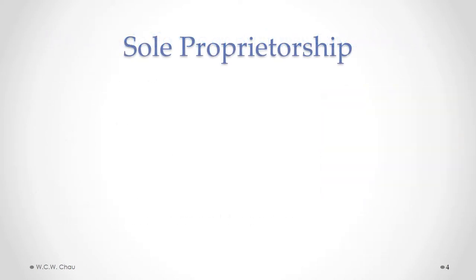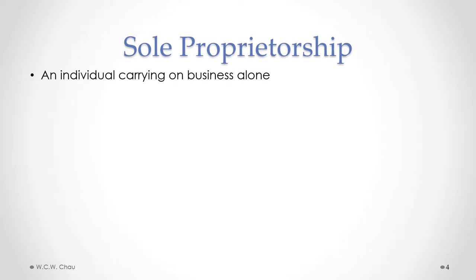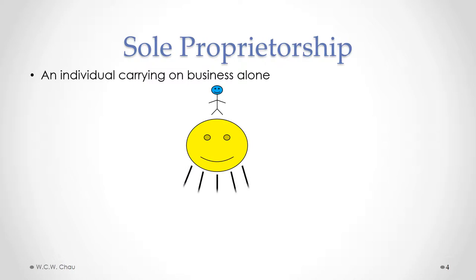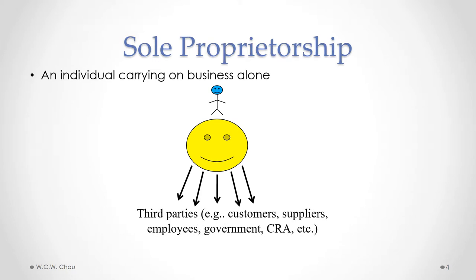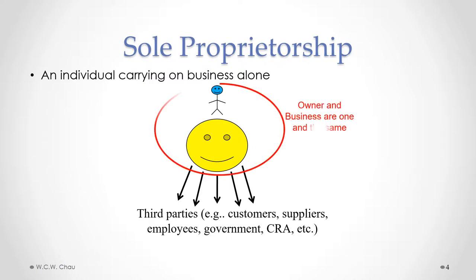Let's do a high-level overview of those three basic types. The simple legal definition of a sole proprietorship is one individual carrying on business alone — one owner carrying on business. The business has various dealings with outside third parties, such as customers, suppliers, employees, various levels of government, and Canada Revenue Agency. The key legal aspect of a sole proprietorship is that the owner and the business are legally considered to be one and the same.